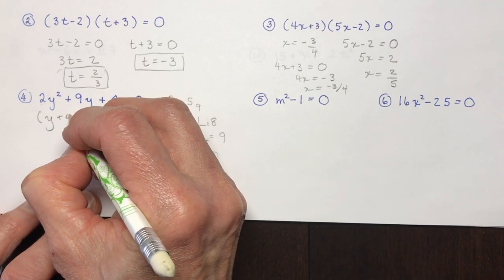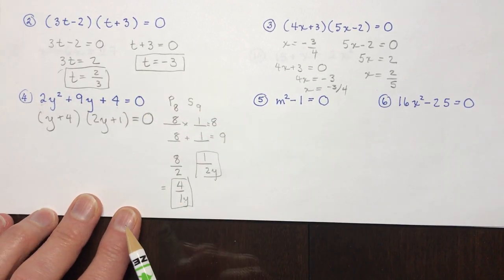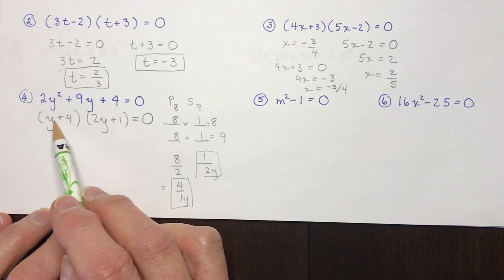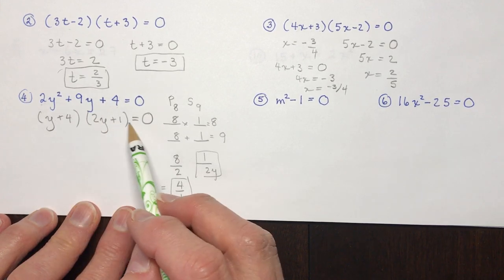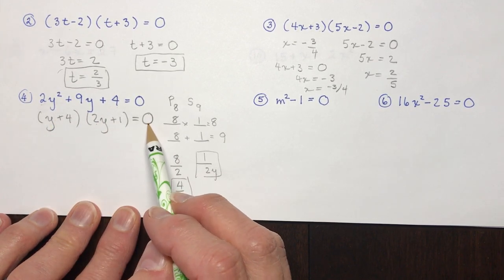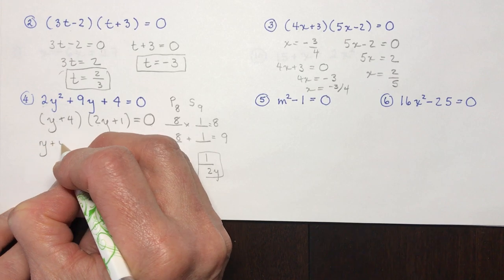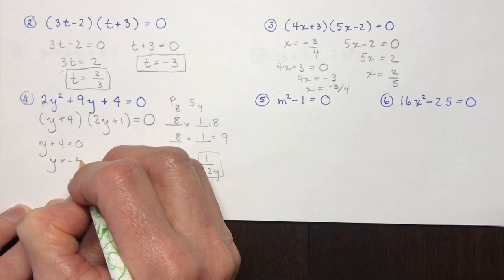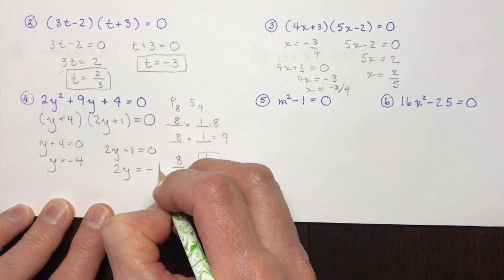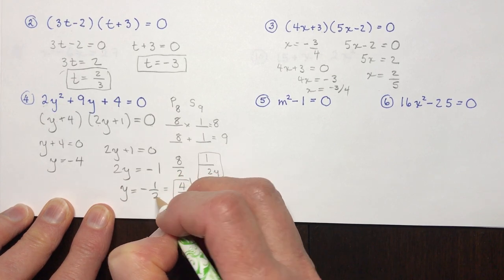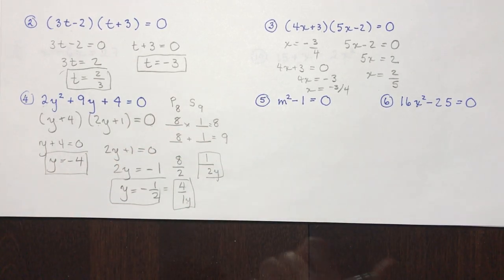So (y plus 4)(2y plus 1) equals zero. Double check: 2y squared plus y plus 8y is 9y plus 4. Now I want to know what value for y makes this zero, so don't stop here thinking you know how to factor. y plus 4 equals zero gives y equals negative 4. Two y plus 1 equals zero gives 2y equals negative 1, y equals minus one half. Those are your two solutions. Don't try to be too cocky, don't go too fast — take your time and do it right.